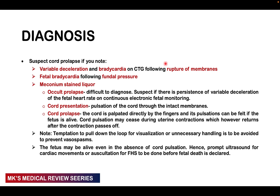We should ideally suspect cord prolapse if we see variable decelerations and bradycardia, especially persistent bradycardia on CTG, particularly after rupture of membranes — these indicate cord compression and fetal hypoxia. Fetal bradycardia following fundal pressure and compression of the umbilical cord, and meconium staining, also suggest fetal distress. With the occult type, diagnosis is quite difficult; continuous CTG monitoring showing variable decelerations is the main clue. With cord presentation, you can feel the pulsations of the cord through the intact membrane on vaginal examination.